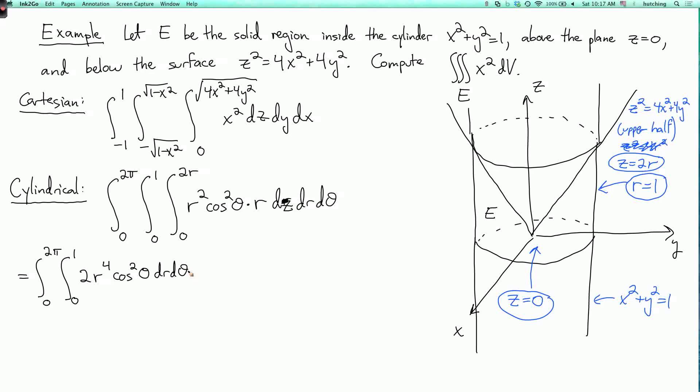And now I need to do the r integral. So the integral of r to the fourth from 0 to 1 is r to the fifth over 5. So this is the integral from 0 to 2pi of 2 fifths times cosine squared theta d theta. And now to integrate this, I need to remember the identity that cosine squared theta is 1 plus cosine 2 theta over 2.